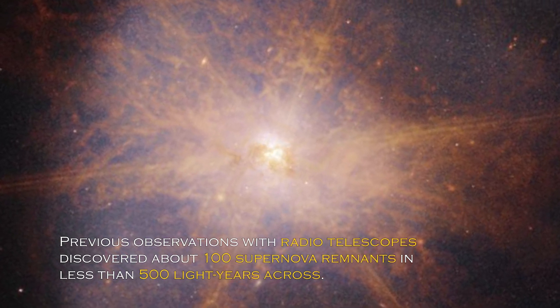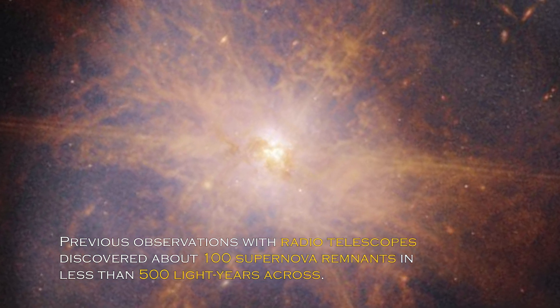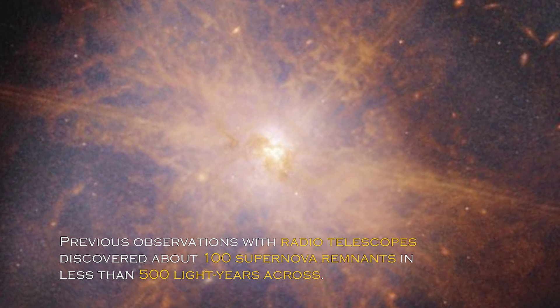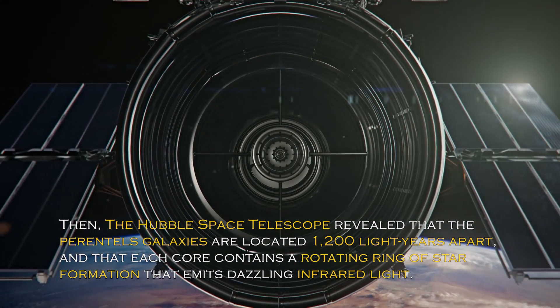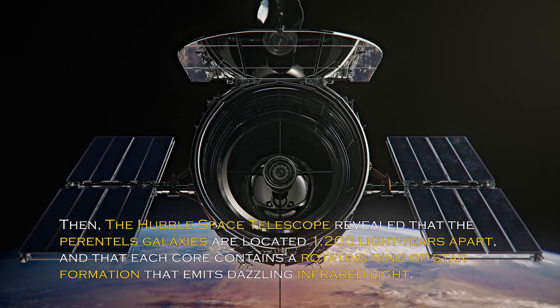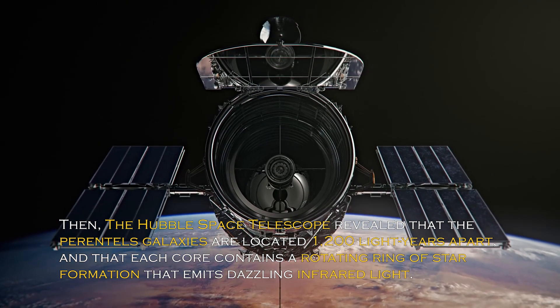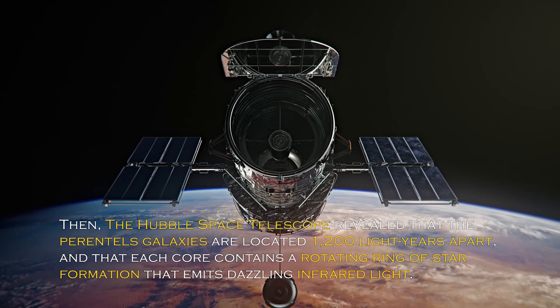Previous observations with radio telescopes discovered about 100 supernova remnants in less than 500 light-years across. Then, the Hubble Space Telescope revealed that the parent galaxies are located 1,200 light-years apart, and that each core contains a rotating ring of star formation that emits dazzling infrared light.